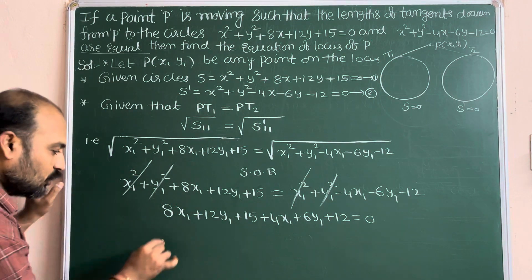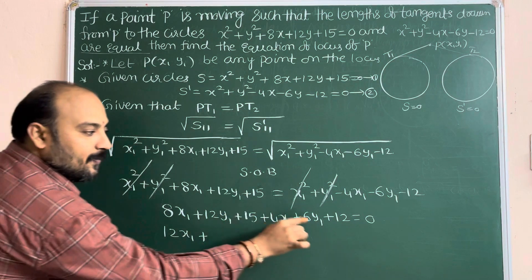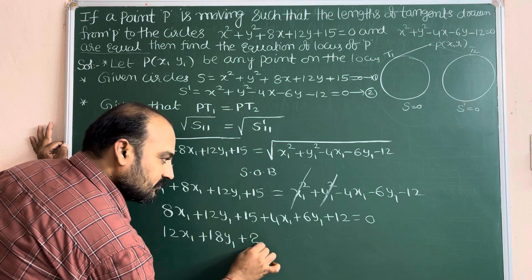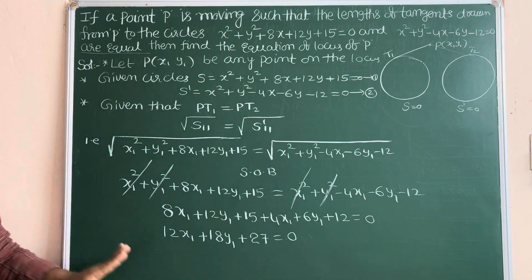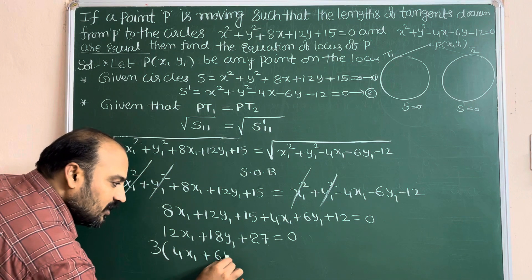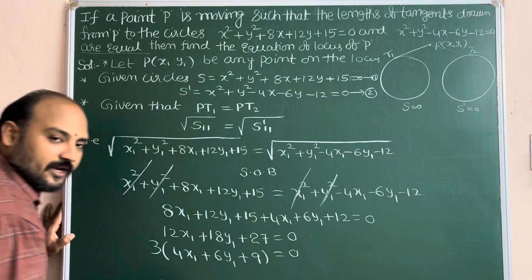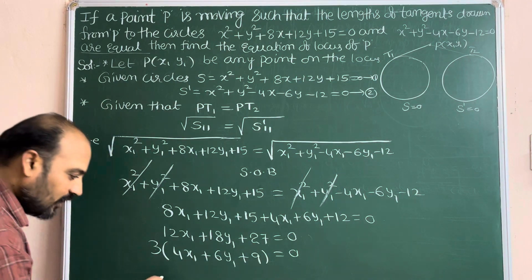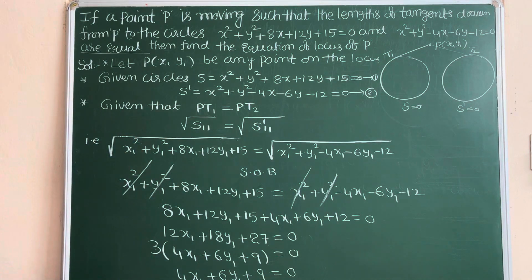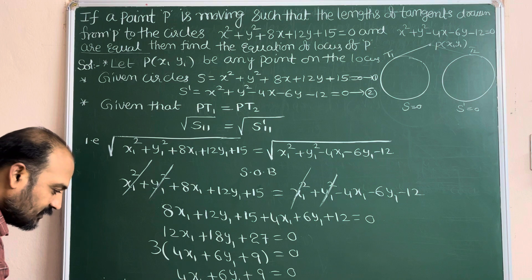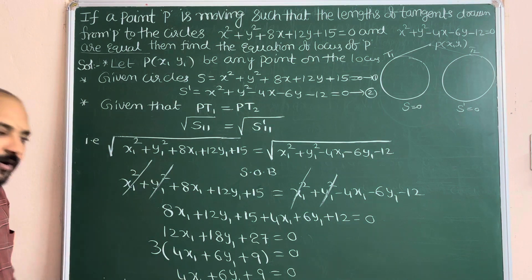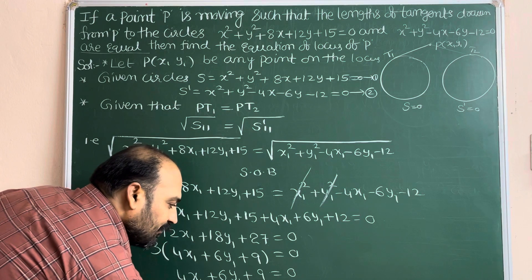Combining like terms: 8x₁ + 4x₁ = 12x₁, 12y₁ + 6y₁ = 18y₁, and 15 + 12 = 27. So we get 12x₁ + 18y₁ + 27 = 0. All terms are multiples of 3, so dividing by 3: 4x₁ + 6y₁ + 9 = 0. Therefore the locus of P is obtained by replacing x₁, y₁ with x, y: 4x + 6y + 9 = 0.